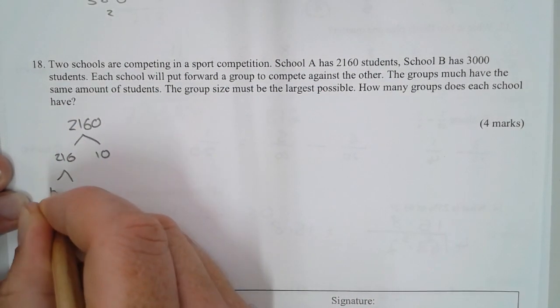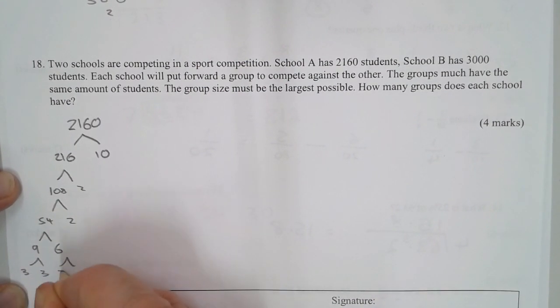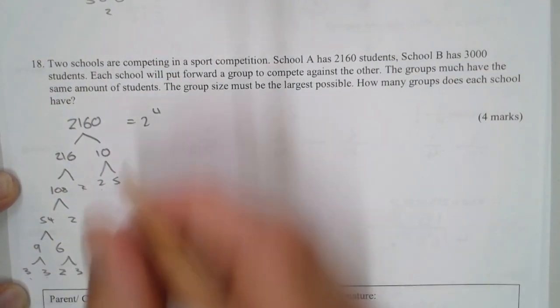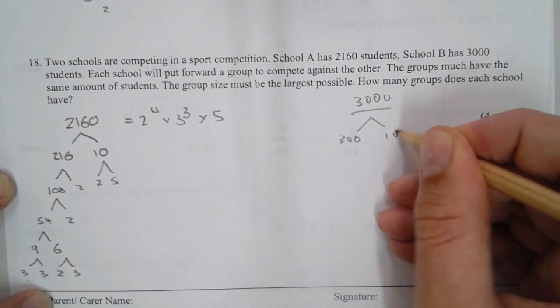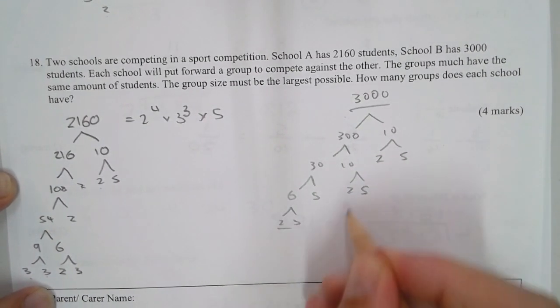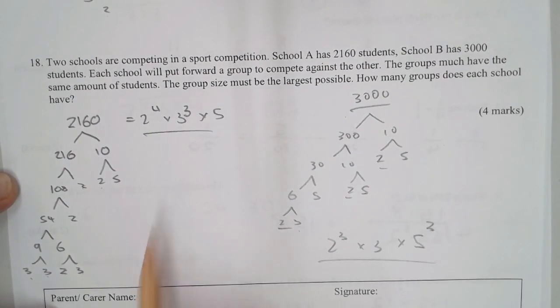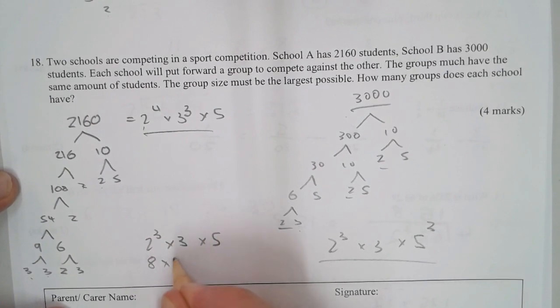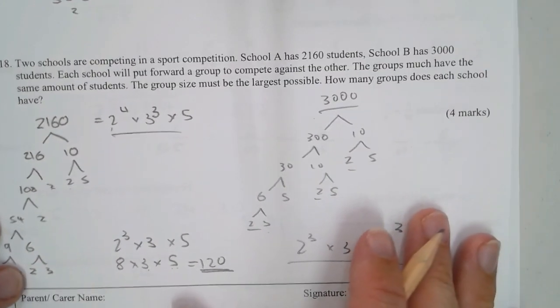One way is to separate 2,160 into what numbers multiply to get it. Half that to get 1,080, that's 54 times 2, 54 is 9 times 6, that's 3 times 3, 2 times 3, and 2 times 5. So that's 4 twos, 3 threes, and a 5. For 3,000, that's 300 times 10, which is 2 times 5, times 30 times 10, also 2 times 5, times 6 times 5, which is 2 times 3. You've got 3 twos, 1 three, and 3 fives.